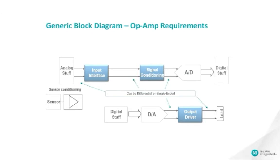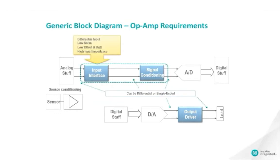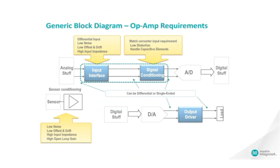This is a typical signal chain. Op-amps are used before an ADC for input interface and signal conditioning. Usually, the op-amps used for input interface require low noise, low offset and drift, high input impedance, and differential input type. They are also used as signal conditioning to match the ADC input requirements and need to be able to handle capacitive loads and have low distortion. For sensor conditioning, the op-amps need to be low noise, low offset and drift, have high input impedance, and high open-loop gain. Also, in the back end of the signal chain, op-amps are usually placed after a DAC to drive the output load. For that, large swings, fast slew rate and settling, and high output current are normally the key requirements.